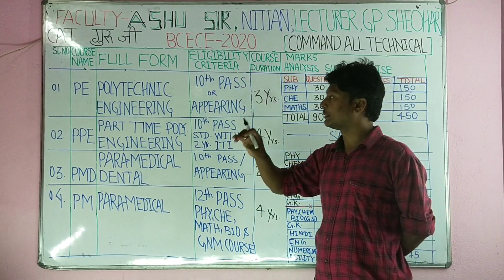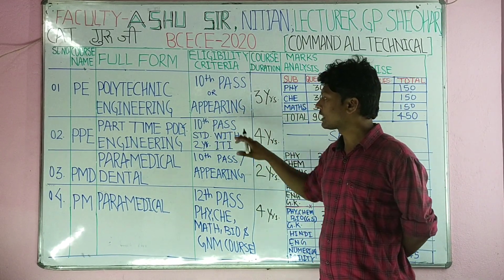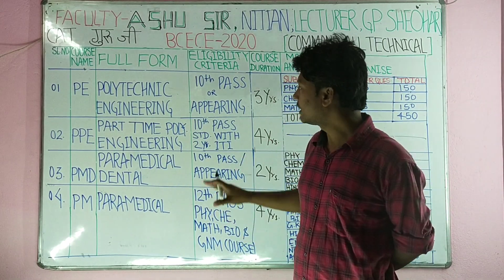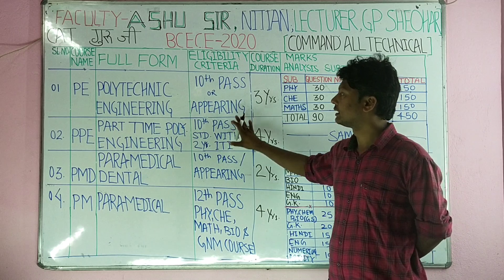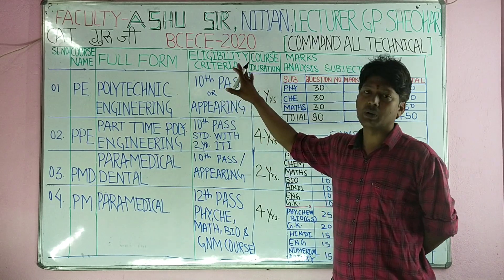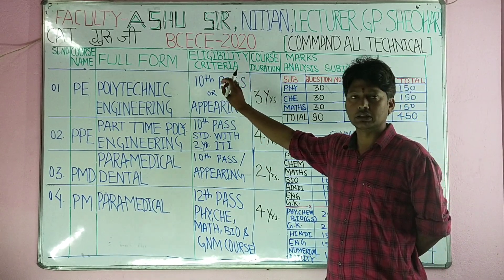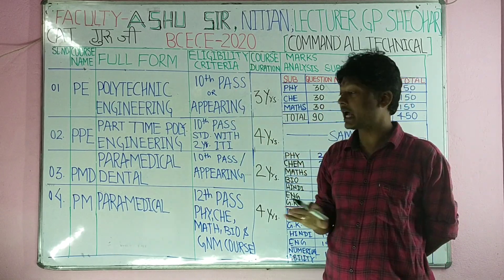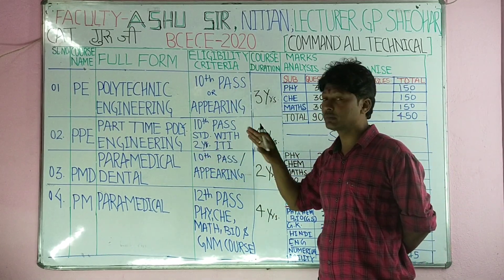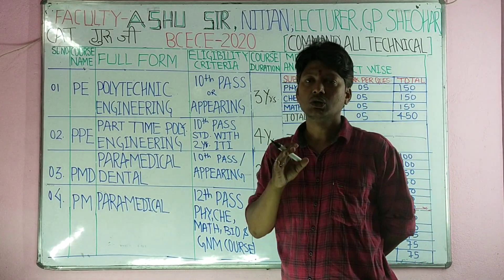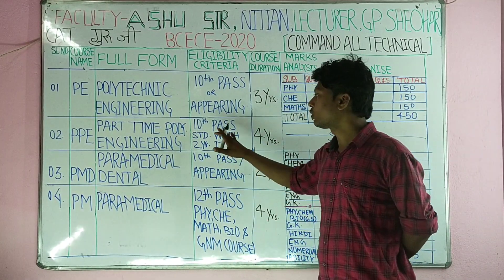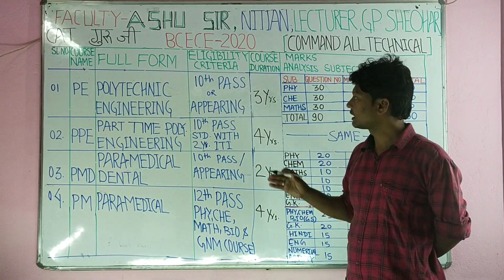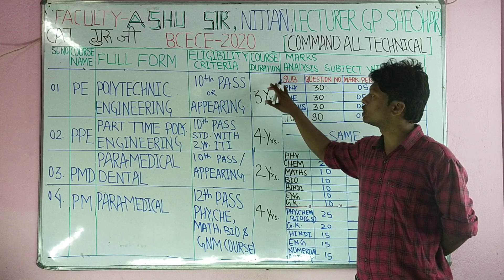This is a 3-year course. To be eligible for PPE, you must have completed a 2-year industrial training course. The next column is course duration.